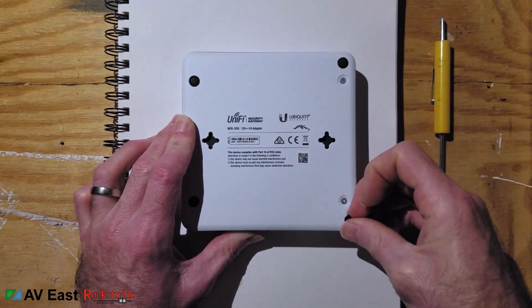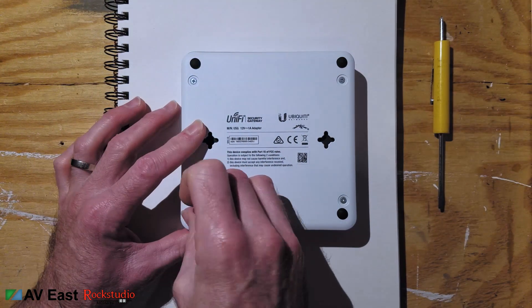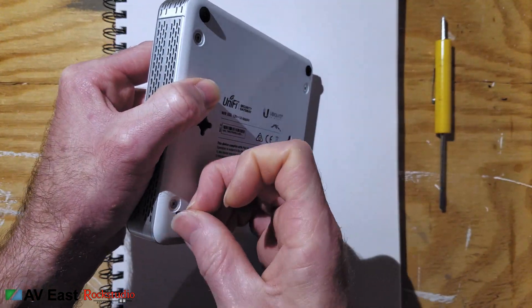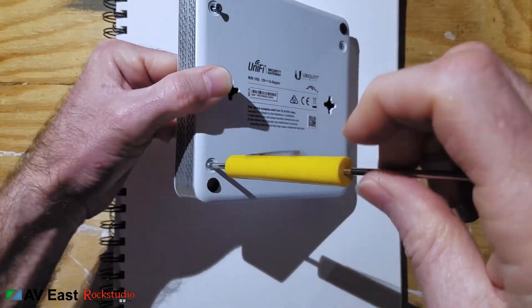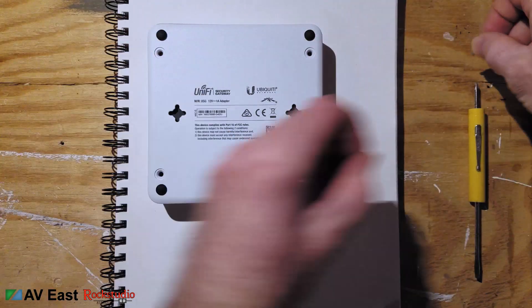Flip the USG over and you can pry up the four rubber feet. Just set them to the outside of the screw holes. They can stay there. Take out the four screws on the bottom. Set the screws to the side where you won't lose them.